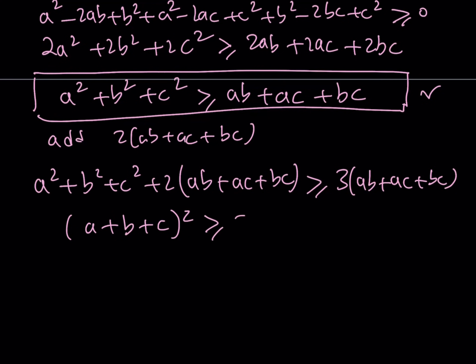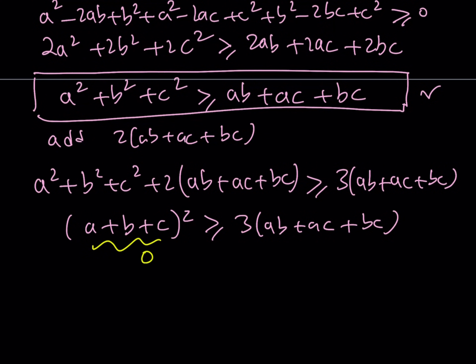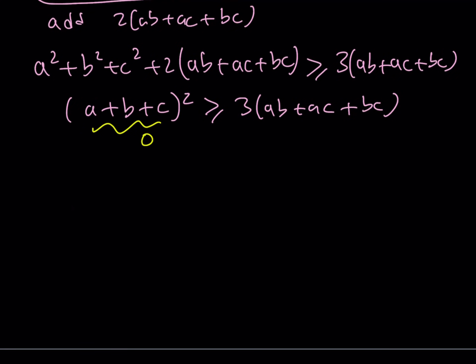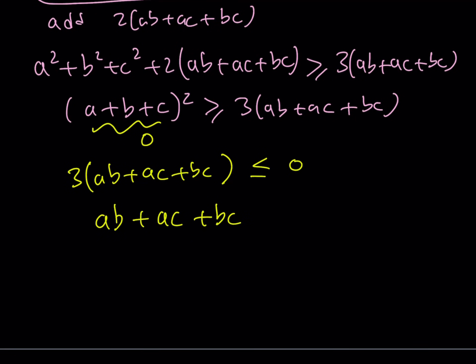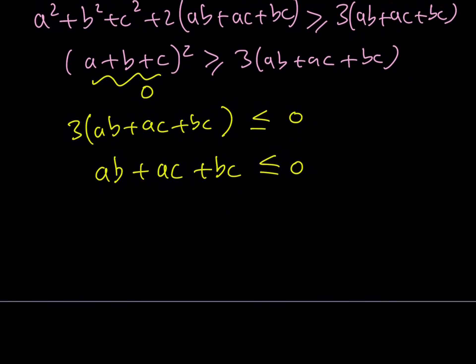Notice that the left hand side is (a plus b plus c) squared. We do know that a plus b plus c is equal to zero, so that side becomes zero. This gives us zero is greater than or equal to three times (ab plus ac plus bc), which means three times (ab plus ac plus bc) is less than or equal to zero. Dividing both sides by three gives ab plus ac plus bc is less than or equal to zero, which is what we were trying to prove. That ends the first method.